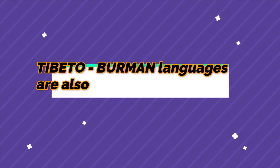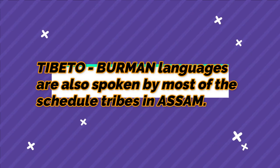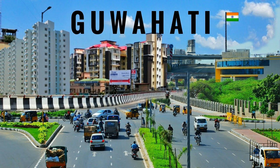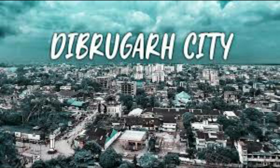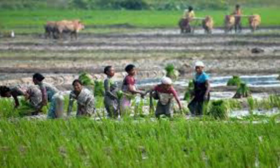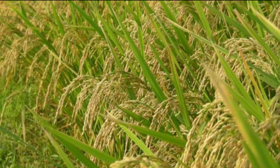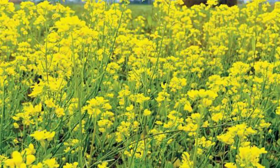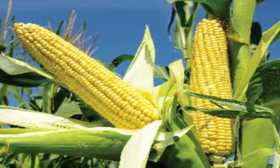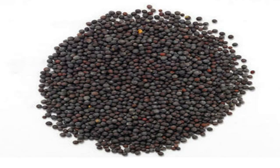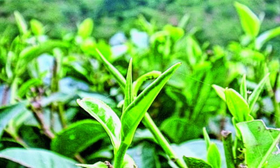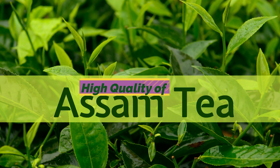Tibeto-Burman languages are also spoken by most of the scheduled tribes. The major cities of Assam are Guwahati, which is the biggest city in the state, Jorhat, Dibrugarh, Silchar and Dubri. Agriculture is of basic importance to Assam. Rice, tea and jute are the main crops grown here. Other crops like oilseeds, pulses, corn, sugarcane and mustard are also grown. Assam grows a large portion of the country's tea and is very famous for its high quality Assam tea.